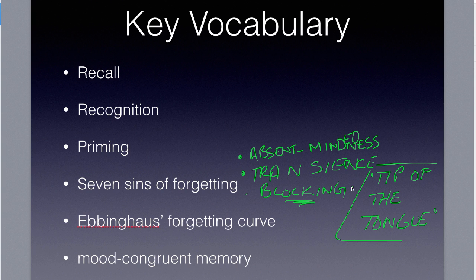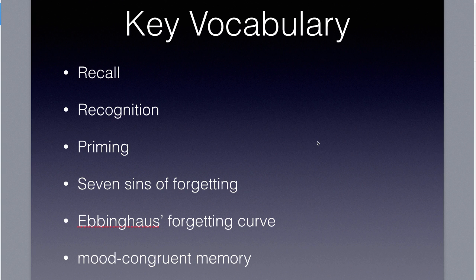Then we jump over to distortion. You've got misattribution — confusing the source of information. Say you heard me say something and you later remember that your mom said it when it was really me, but you gave credit to your mom. It's just misattribution: you forgot who actually gave you the information, where you actually got it from.